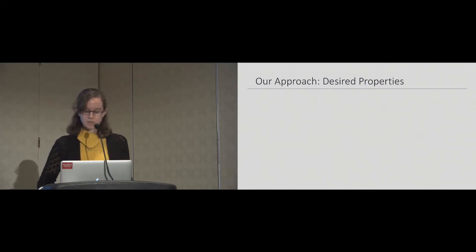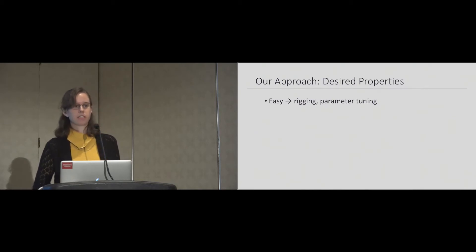When designing our rigs, we made sure to satisfy four properties. First, we wanted our rigs to be easy to create. By simplifying the rigging process, we enable users to quickly add secondary effects to new characters. We also streamline the parameter tuning process by exposing a small set of parameters that nonetheless support a wide range of effects. Second, our rigs create plausible motion by using physical simulation to propagate motion. The use of simulation enables secondary parts to respond naturally to external forces like wind, gravity, and collisions.